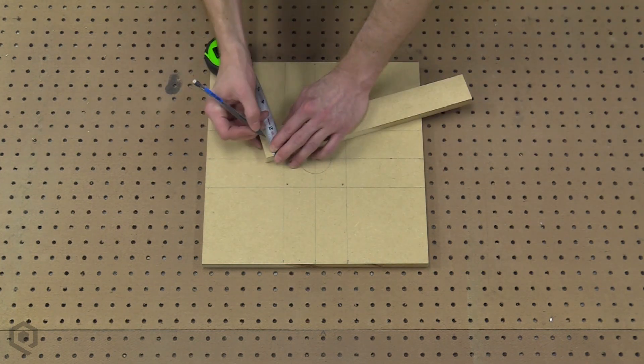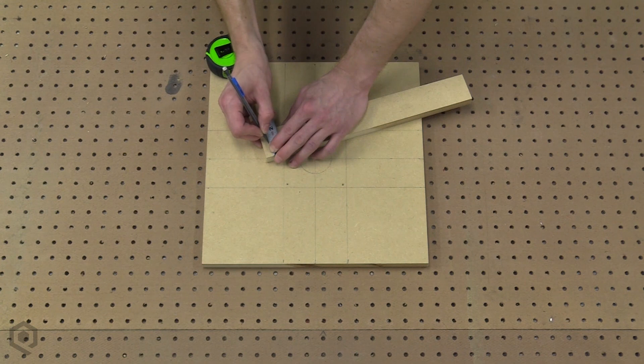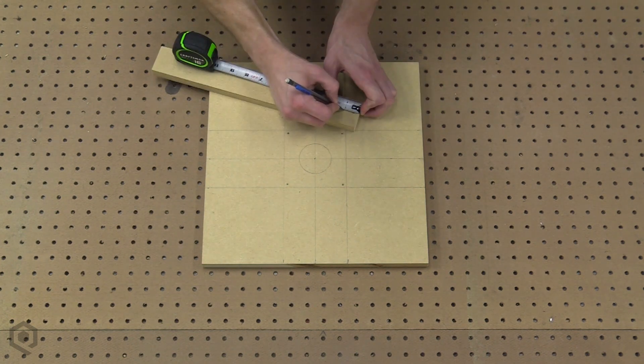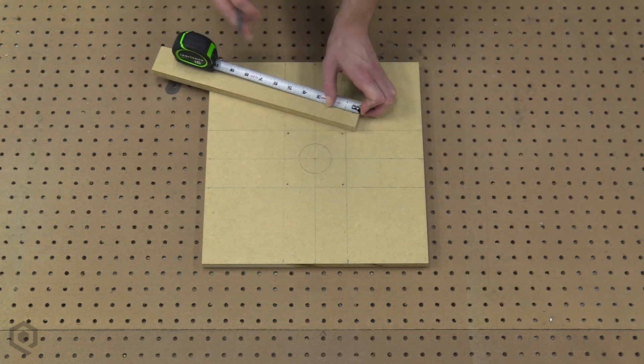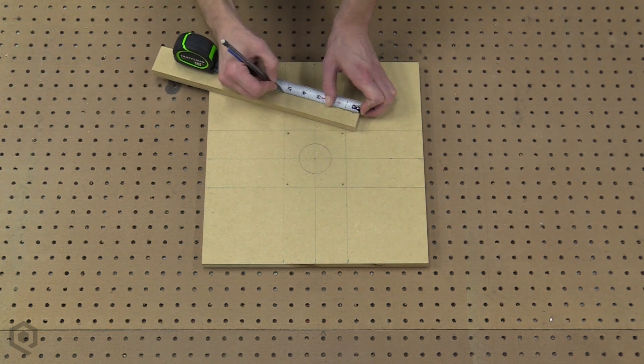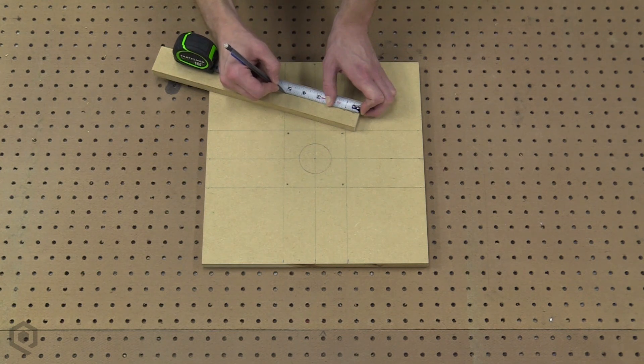Next, we're going to make us a makeshift compass. So grab that long skinny piece of wood and mark the center of it. Turn it 90 degrees and make a mark on the center line one inch away from the small edge. Then make a mark that's five inches away from the edge. We do this because we're making an eight-inch diameter turntable. If you want to make a different size, do the math.